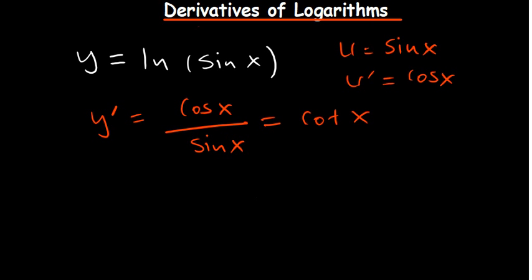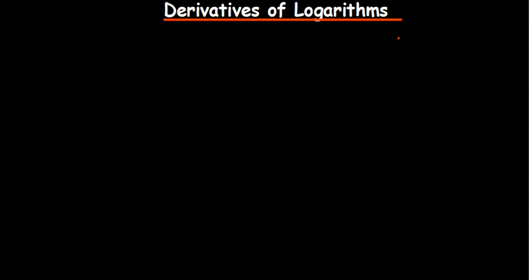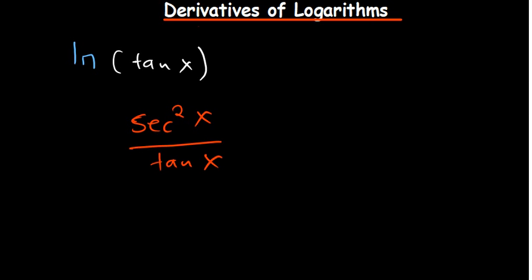By the way, cot x comes from trigonometric identities. For practice, try natural log of tan x. The derivative of tan x is sec² x, so the answer is sec² x over tan x.